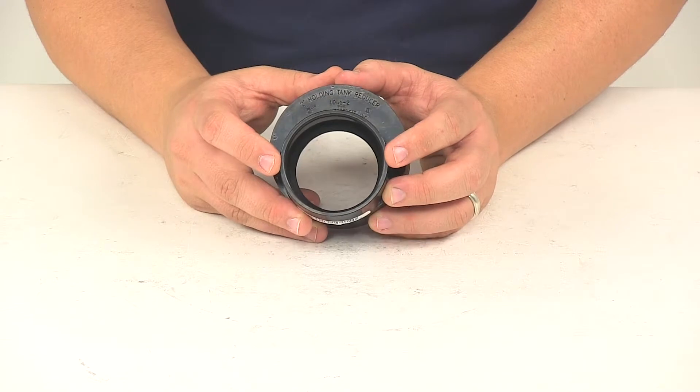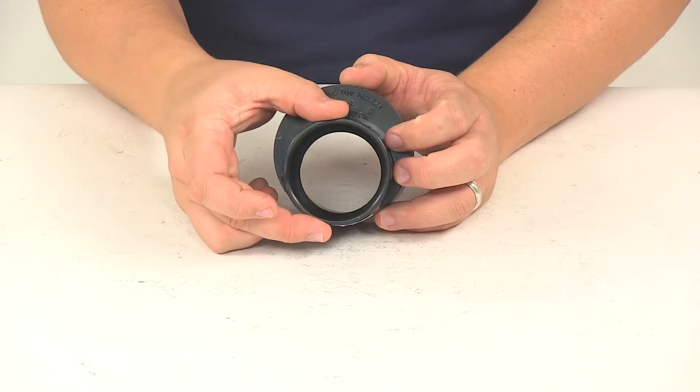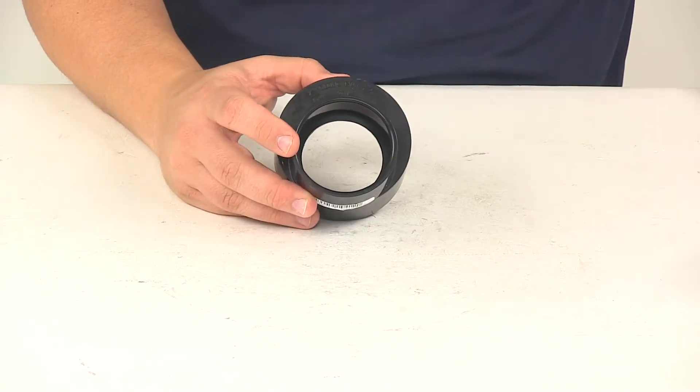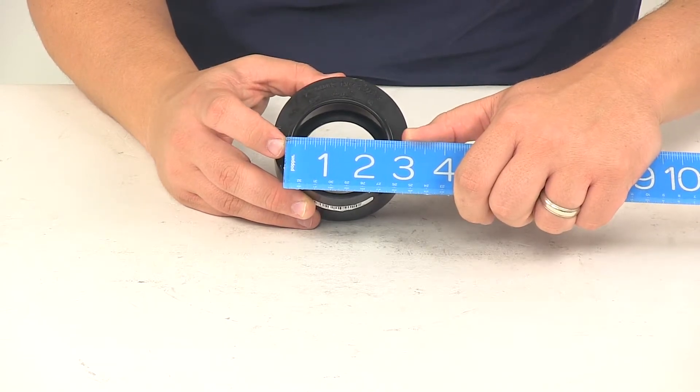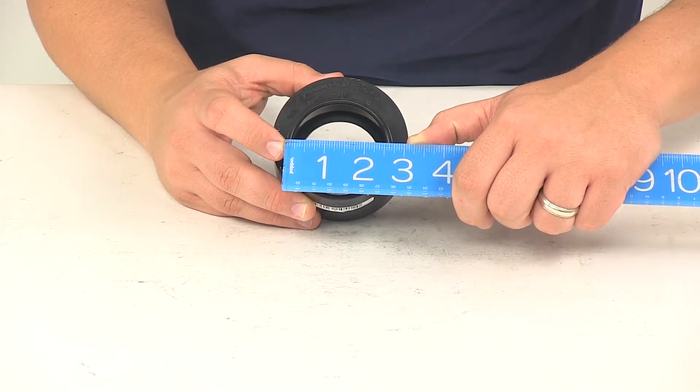On this end is the two-inch hub or female end. This gives us an inner diameter of about two and three-eighths inches. The outer diameter is about two and three-quarters of an inch.